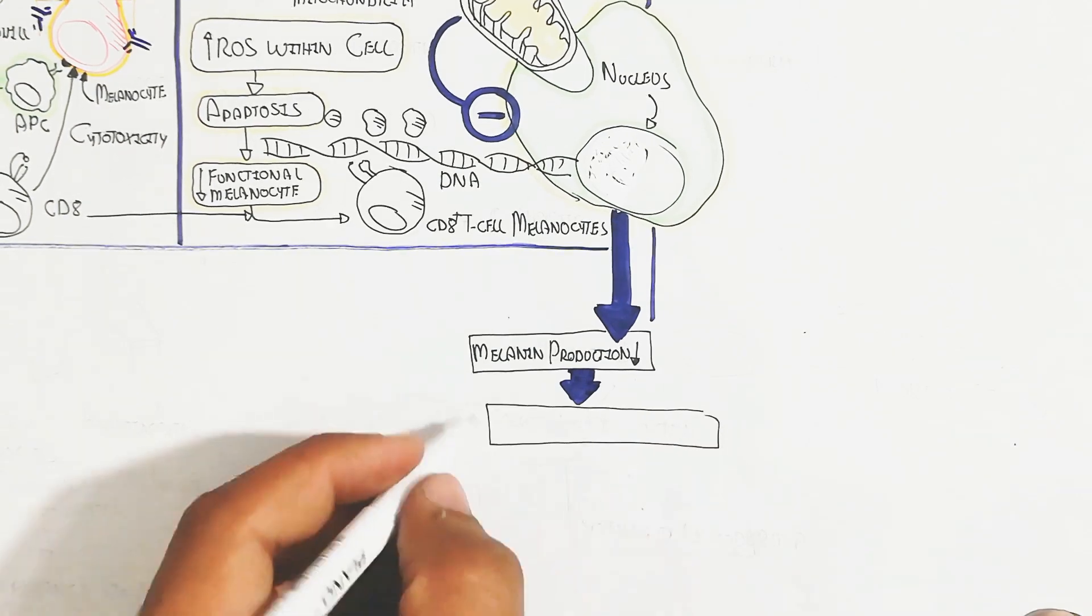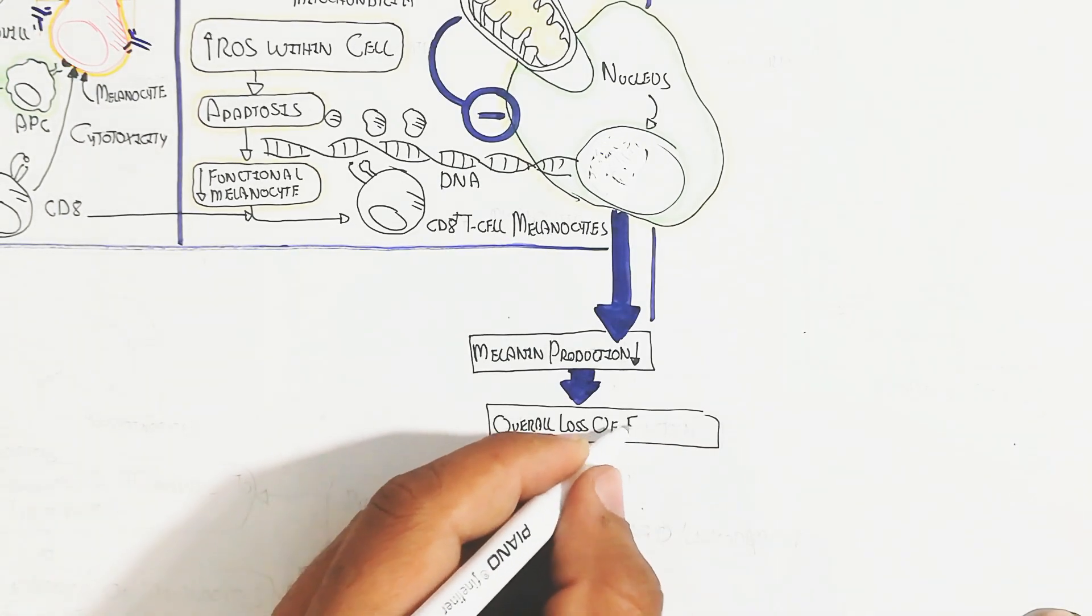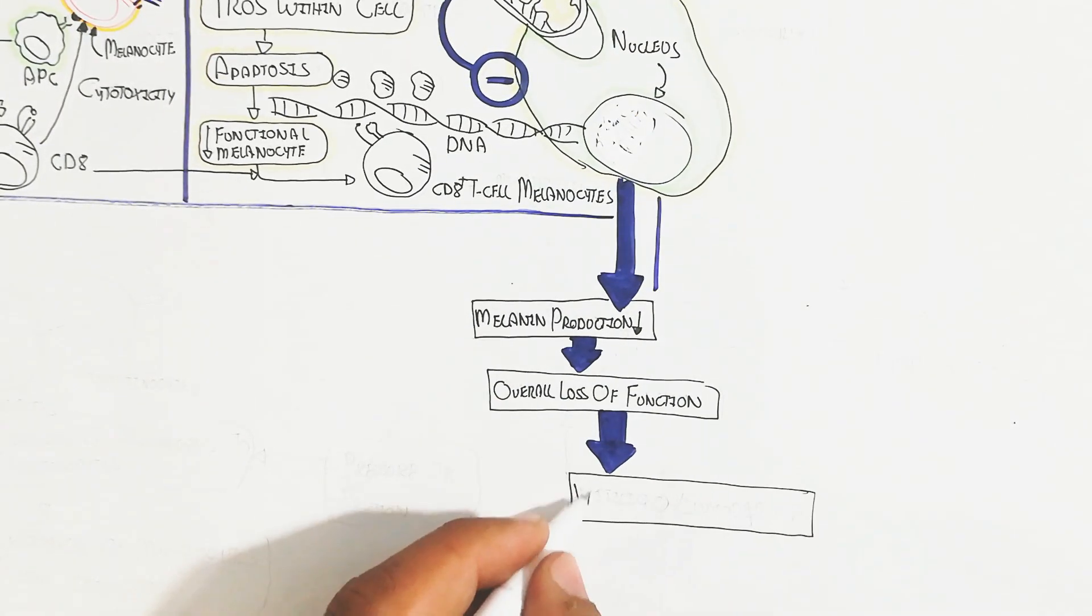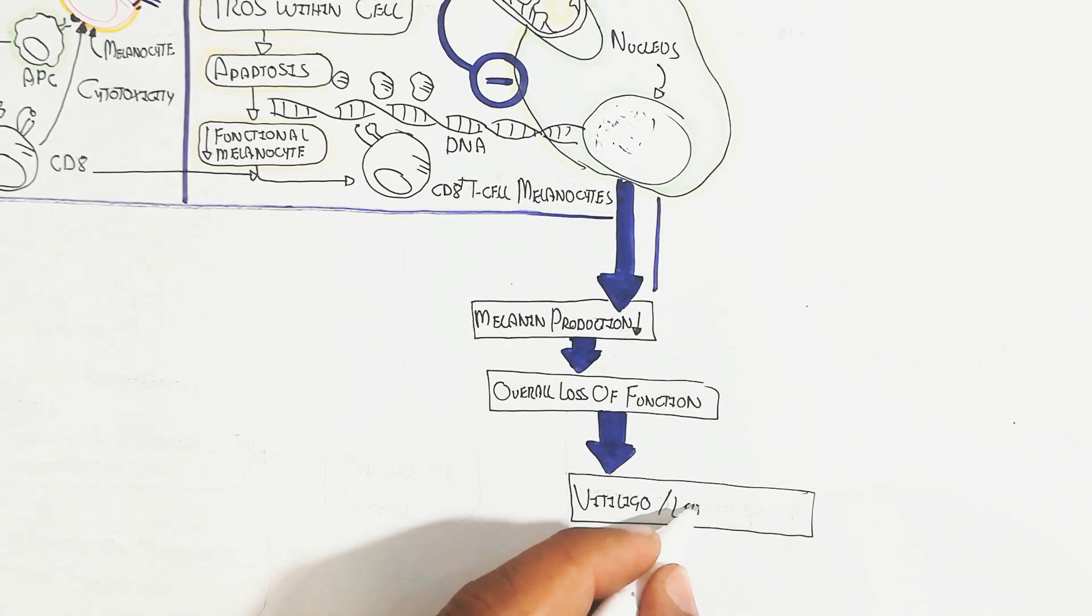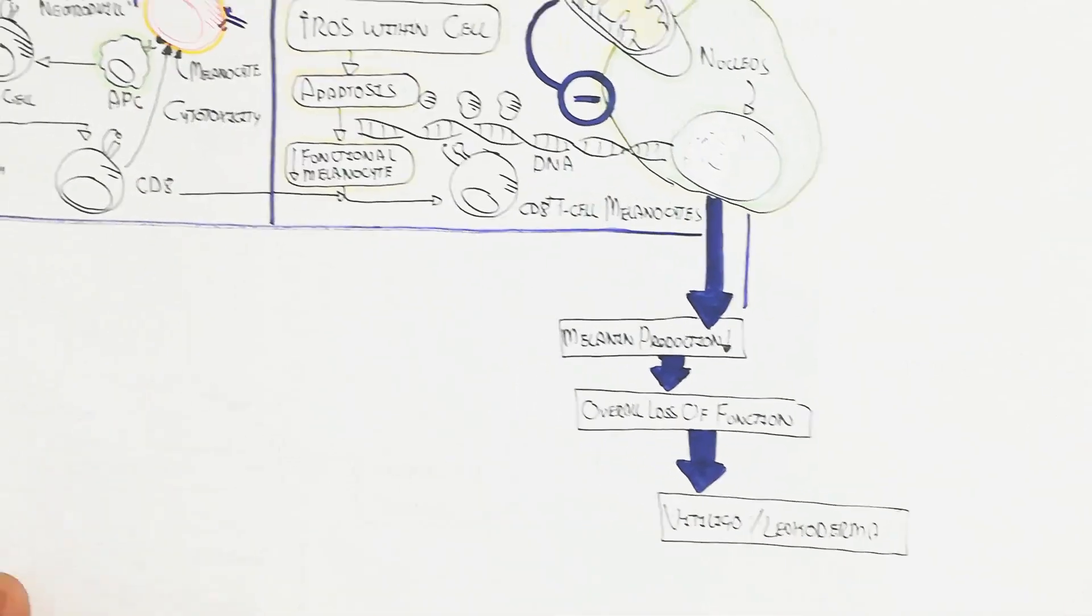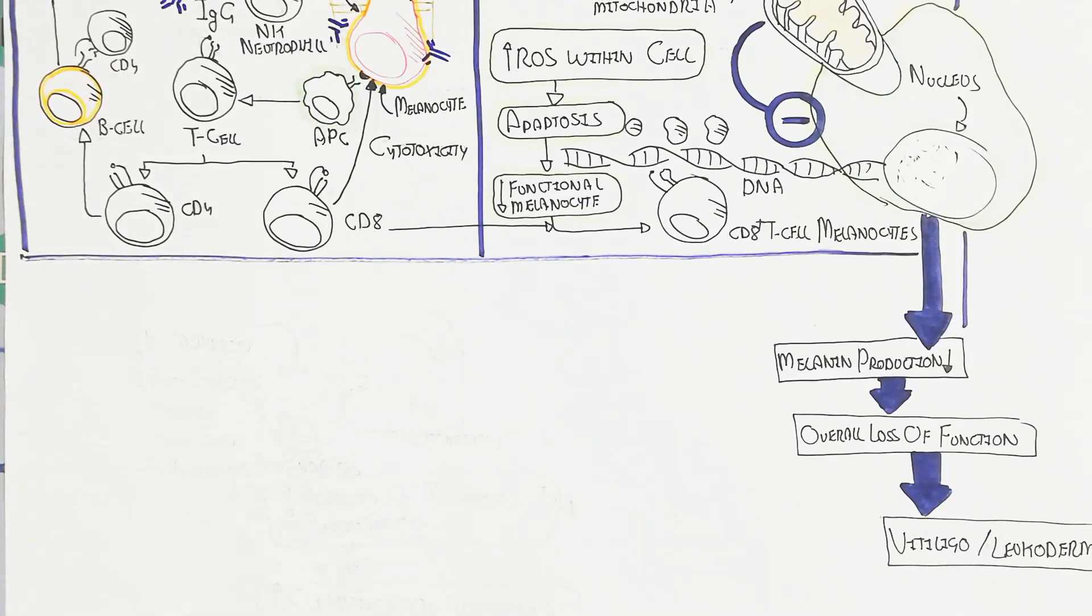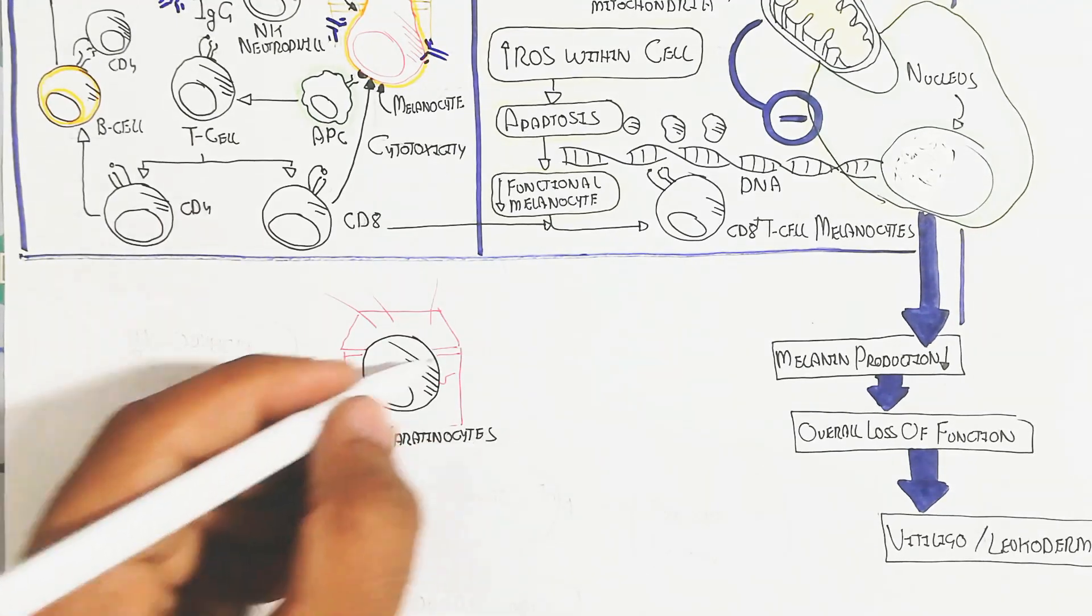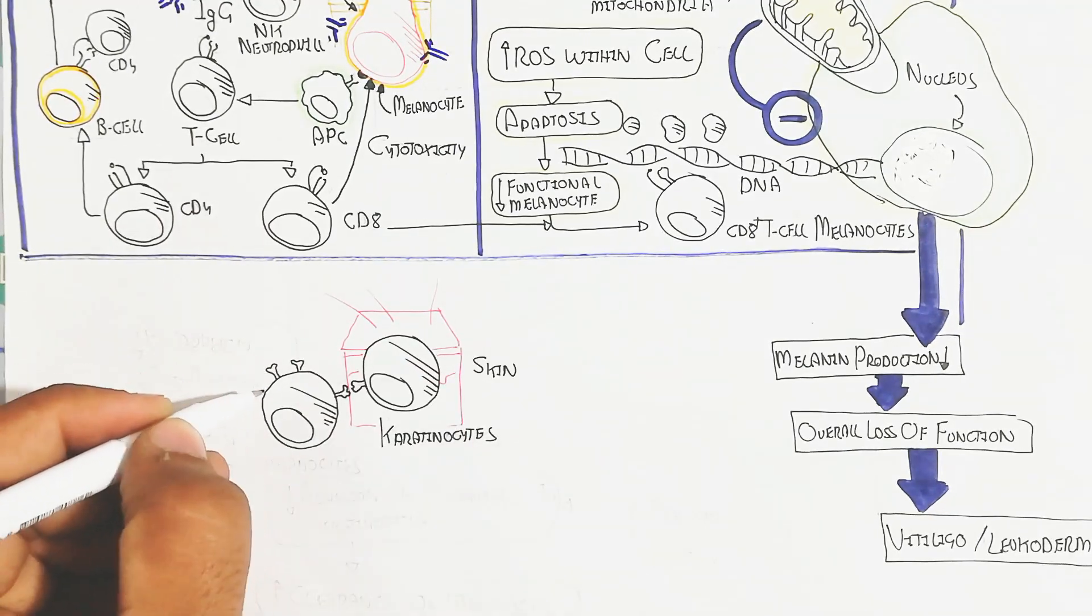Remember, vitiligo or leucoderma becomes possible through this impaired mitochondrial function and cell susceptibility to oxidative stress, as well as production of IgG and auto-antibodies. This is how the autoimmune disorder occurs.